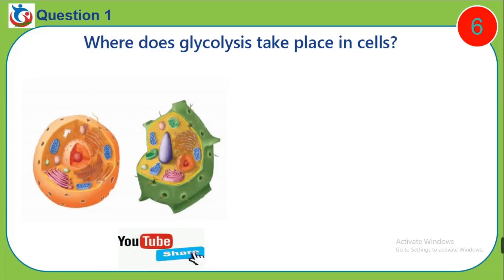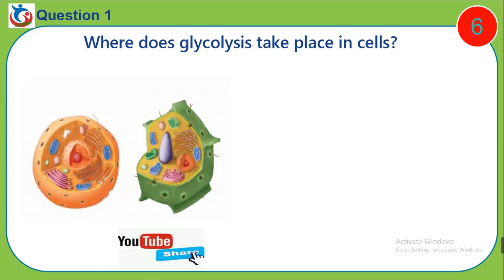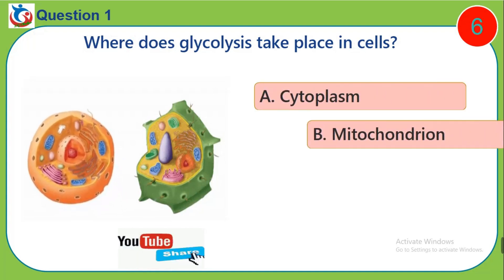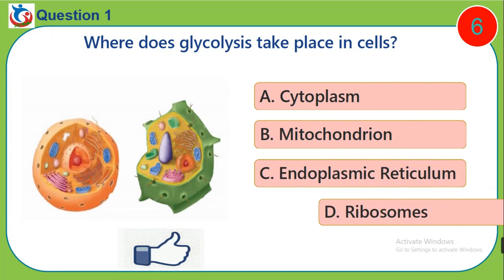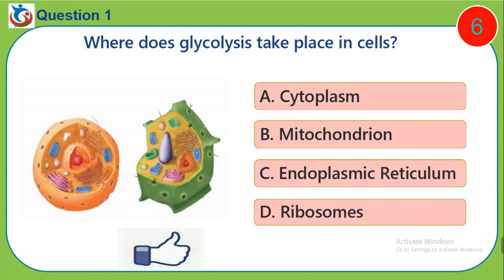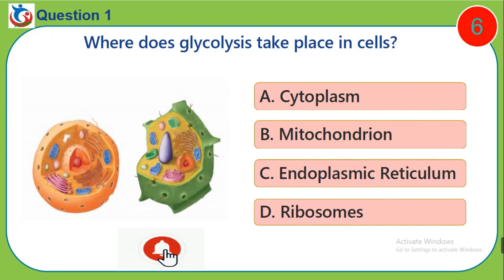Question 1. Where does glycolysis take place in cells? A. Cytoplasm. B. Mitochondria. C. Endoplasmic reticulum. D. Ribosomes.